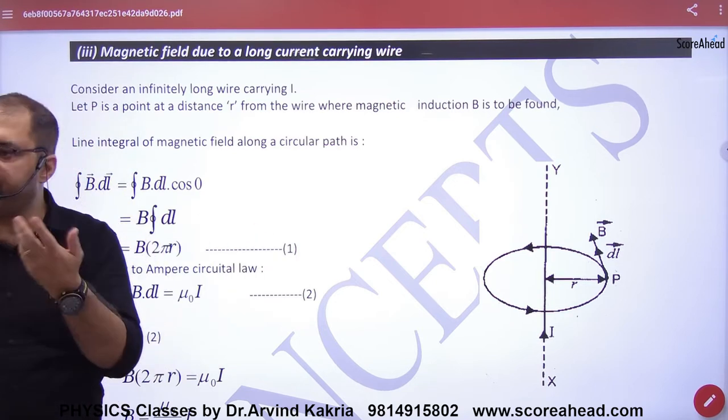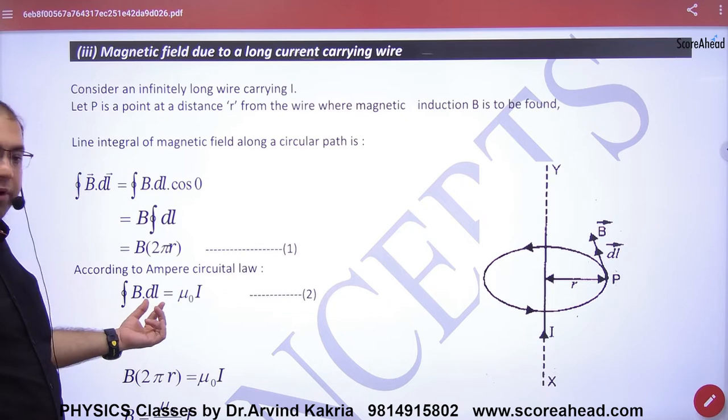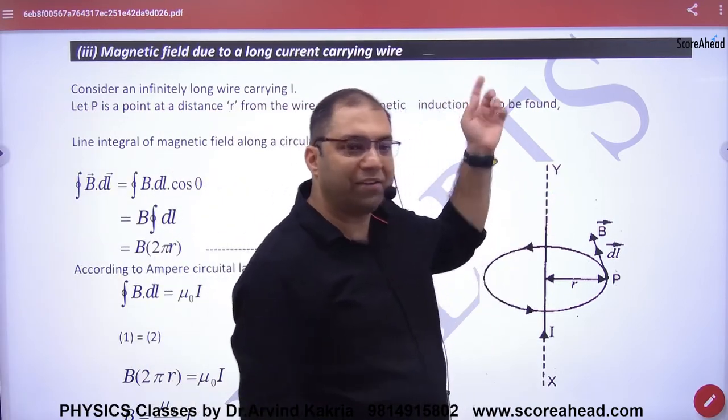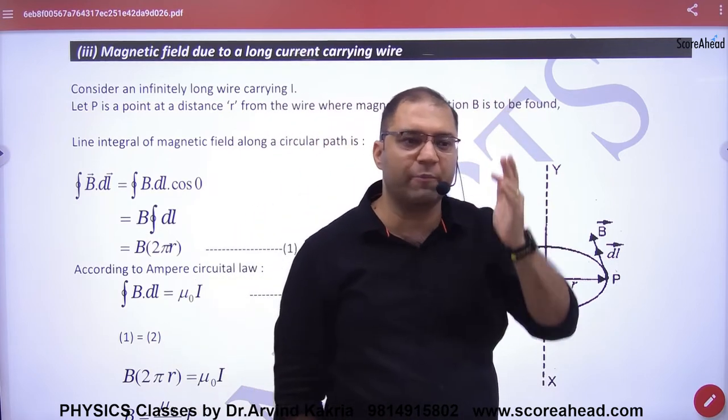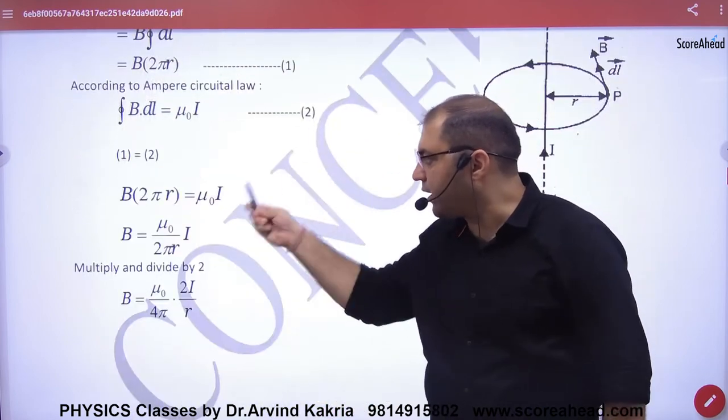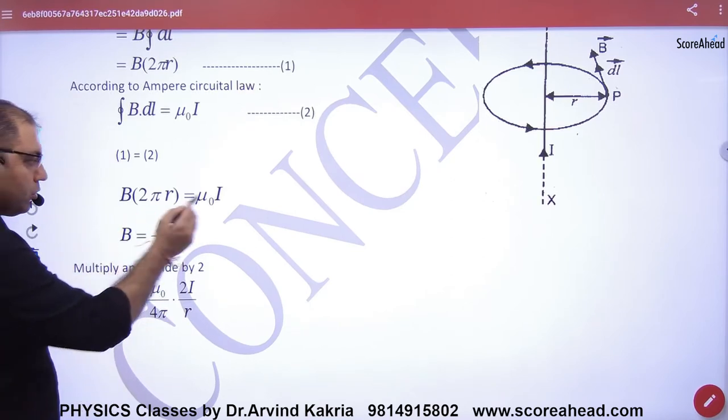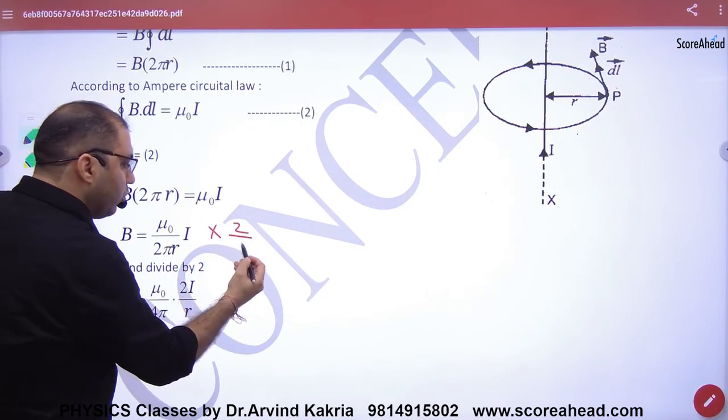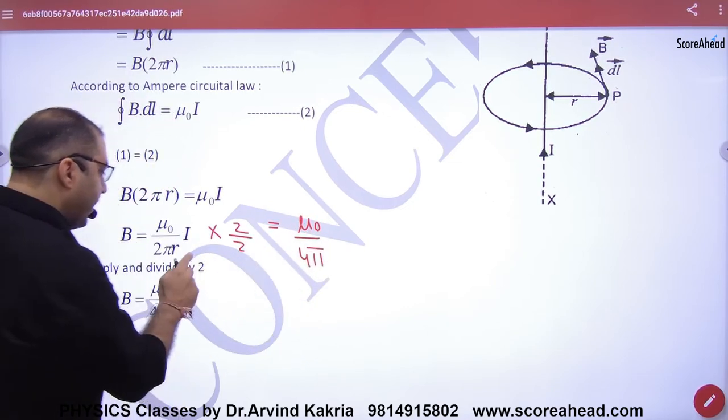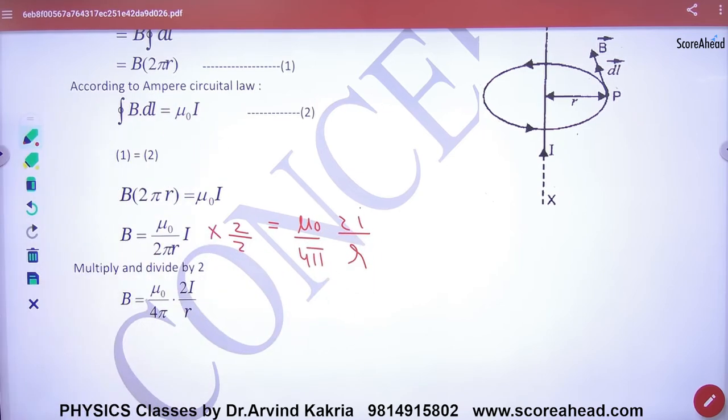Integration of B dot dl around the ring equals μ₀ times the enclosed current. The straight wire passes current i, so μ₀ times i. Equating both and solving for B: multiply and divide by 2, giving B equals μ₀ by 4π times 2i by r.